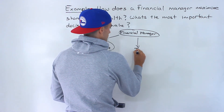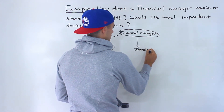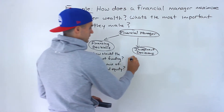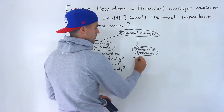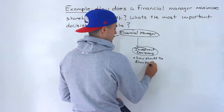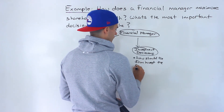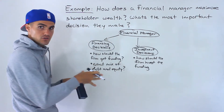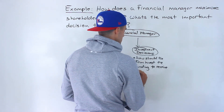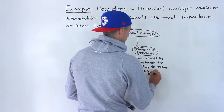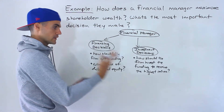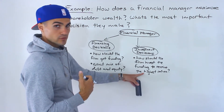The next kind of decision is investment decisions. This is basically how should the firm invest the funding. So once they have funding, how should the firm invest it to receive the highest return?